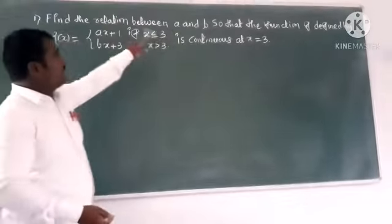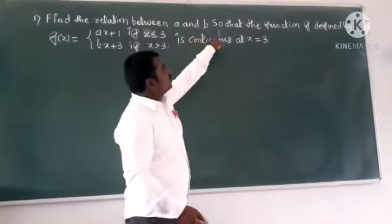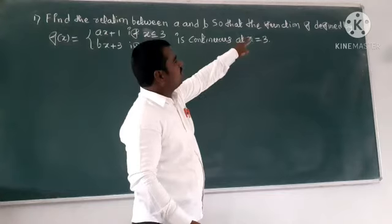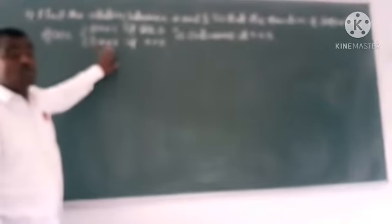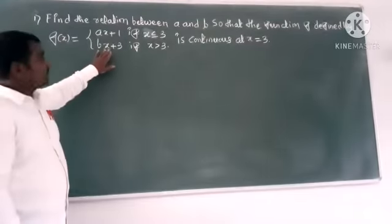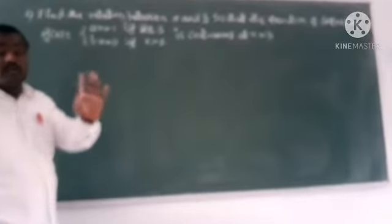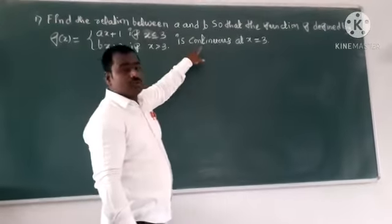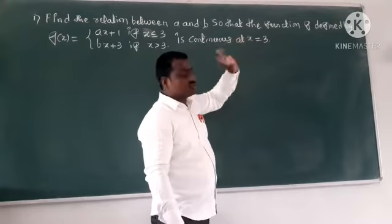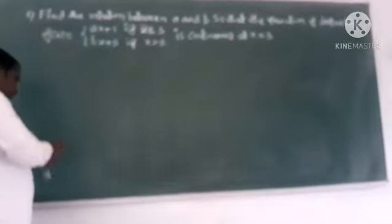Find the relation between a and b so that the function f, which is defined using the signum function, is continuous at the point x equals three. In this function there are two unknown values, and along with x, there are arbitrary constants a and b.